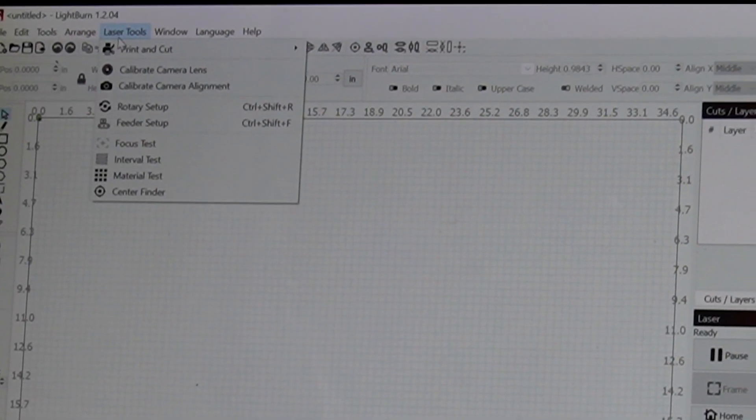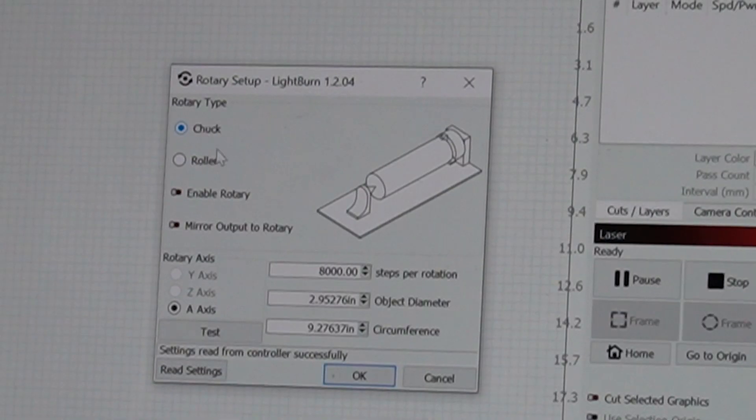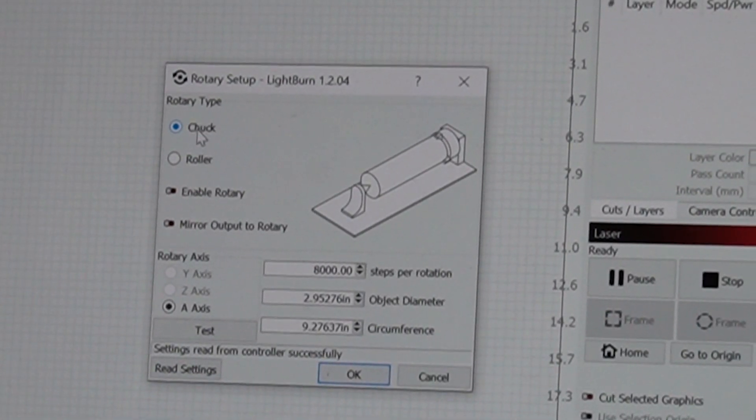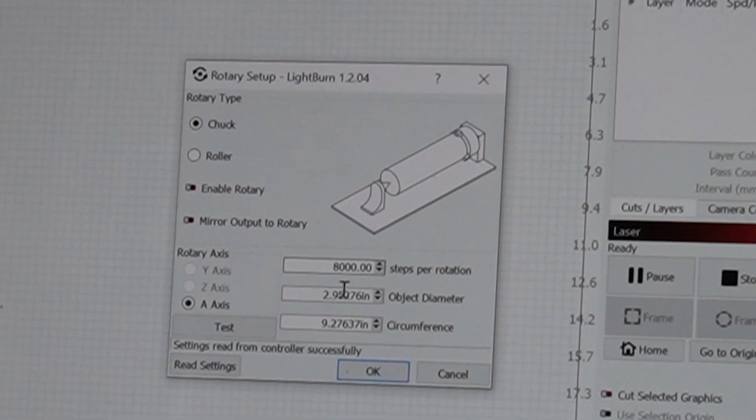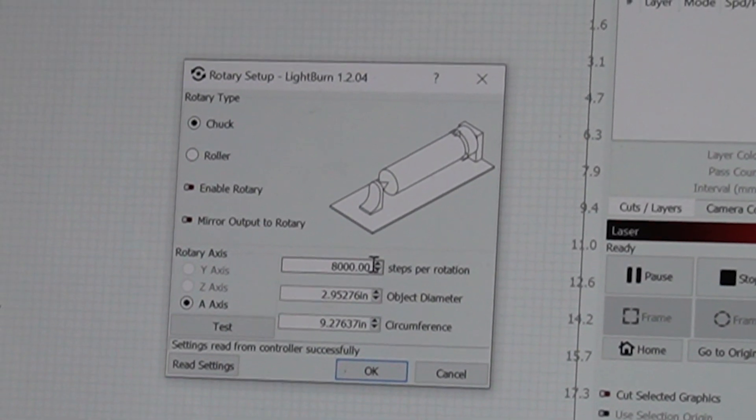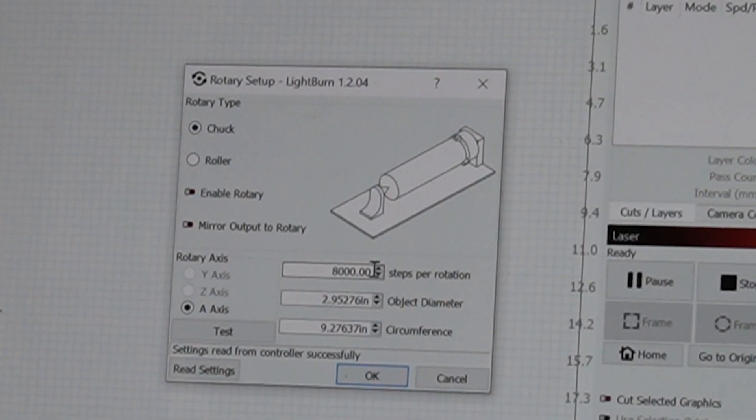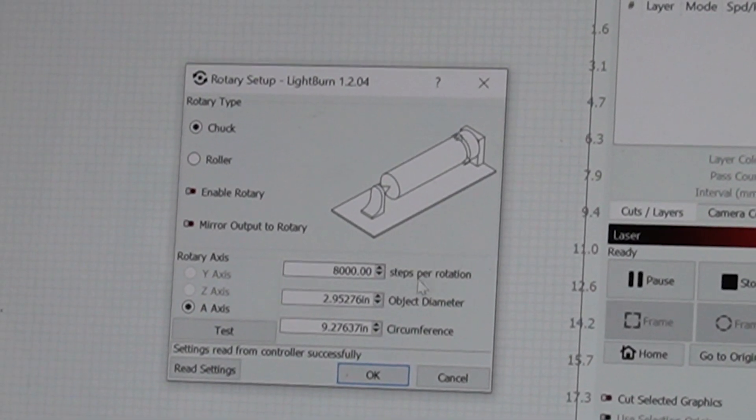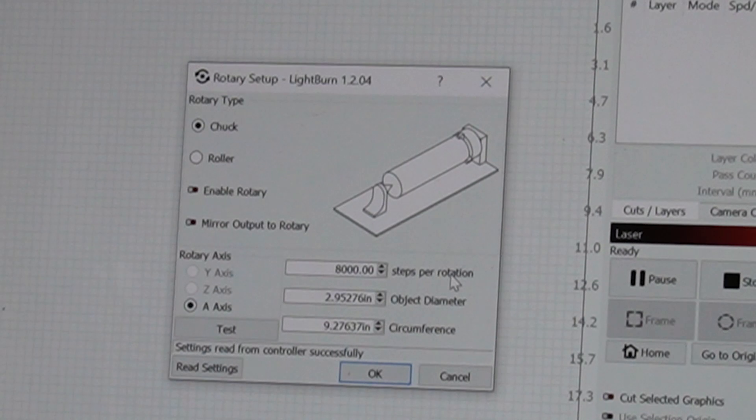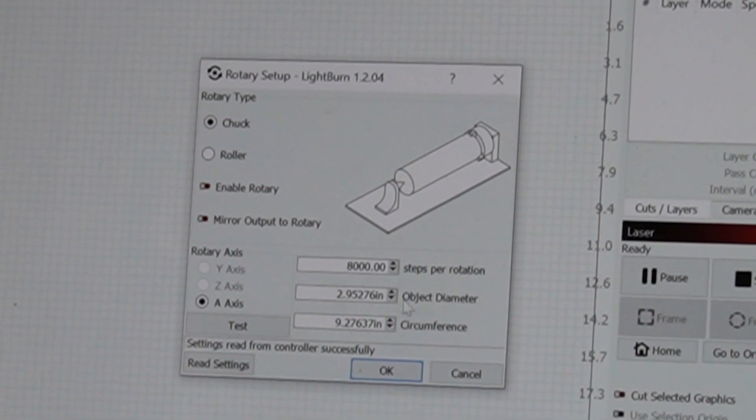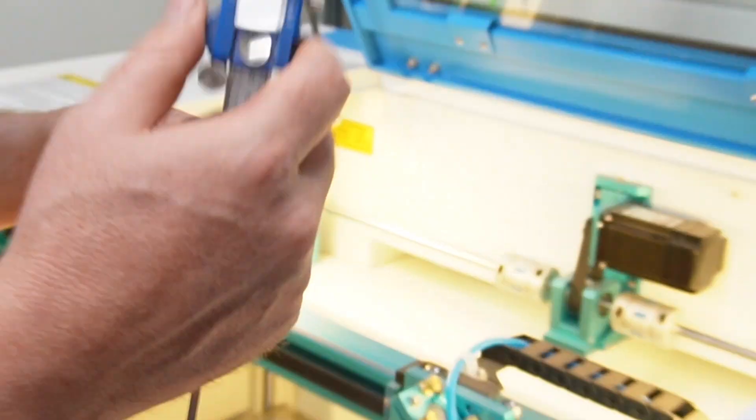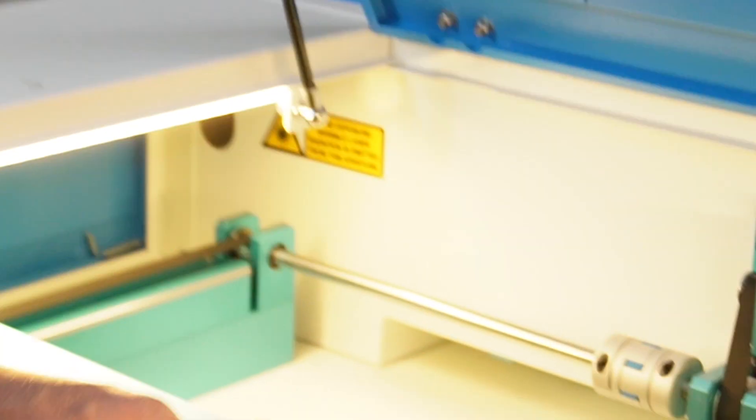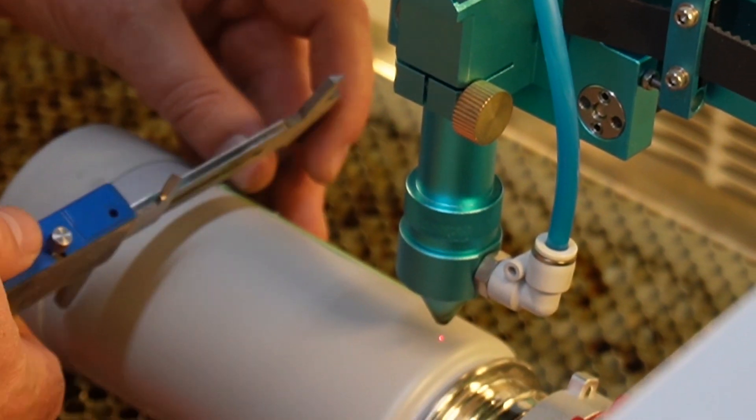Just go under laser tools and rotary setup. We're going to set it up as a chuck rotary because this one has the chuck jaws. And then the one thing you've got to remember for the thunder laser and for the Pyburn grip is that it's 8,000 steps per rotation. You can change that by adjusting the dip switches, but this is what it comes set as default. That's in your manual.